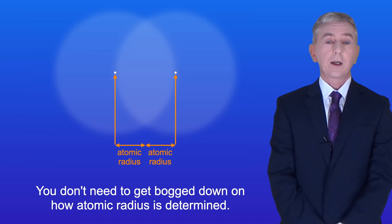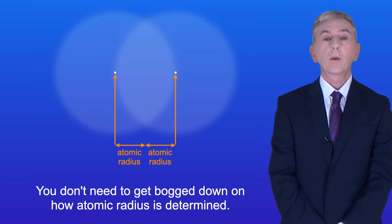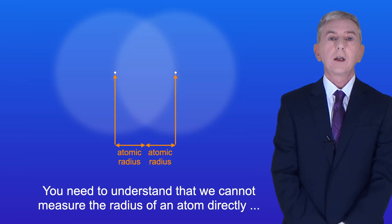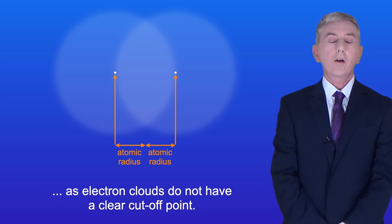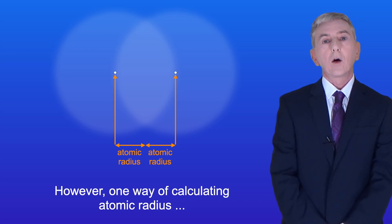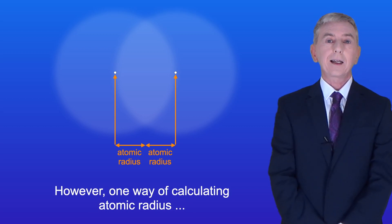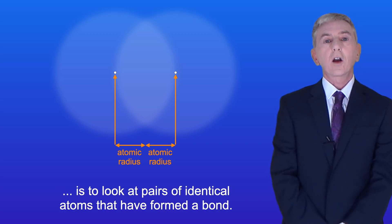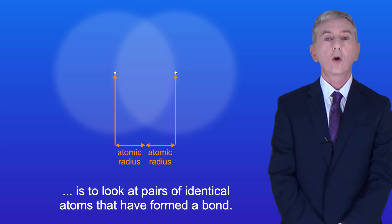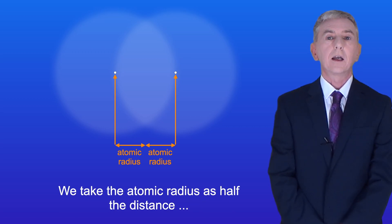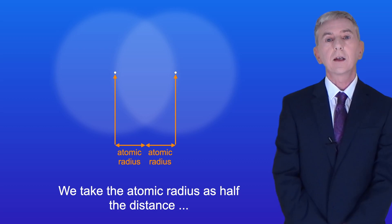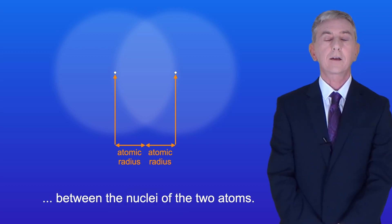You don't need to get bogged down on how atomic radius is determined, but you need to understand that we cannot measure the radius of an atom directly, as electron clouds do not have a clear cutoff point. However, one way of calculating atomic radius is to look at pairs of identical atoms that have formed a bond. We take the atomic radius as half the distance between the nuclei of the two atoms.